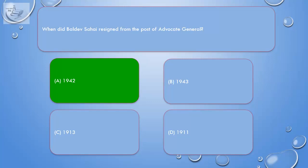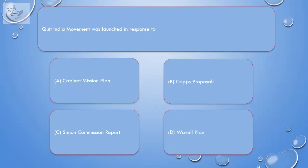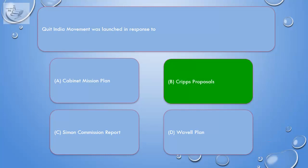Question: Quit India Movement was launched in response to — A. Cabinet Mission Plan, B. Cripps Proposals, C. Simon Commission Report, D. Wavell Plan. Correct answer is B: Cripps Proposals.